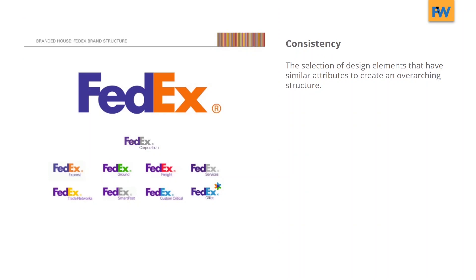Consistency: the selection of design elements that have similar attributes to create an overarching structure. With FedEx's various logos, the use of consistency is obvious. There's consistency in the typography and in the positioning, but color is changed from one logo to the next to give variation. Consistency gives the set of logos order and gives you the idea that they are all related to each other.